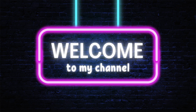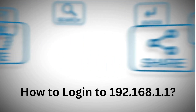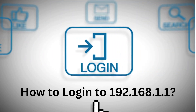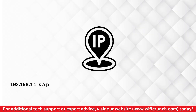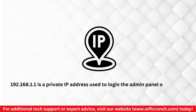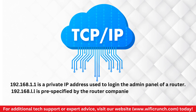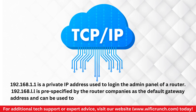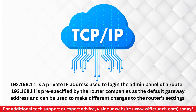Welcome to my channel. How to log in to 192.168.1.1. 192.168.1.1 is a private IP address used to log in to the admin panel of a router. It is pre-specified by the router companies as the default gateway address and can be used to make different changes to the router settings.